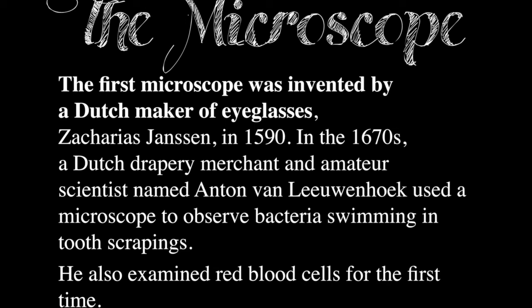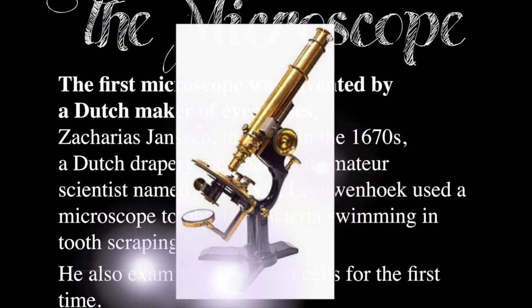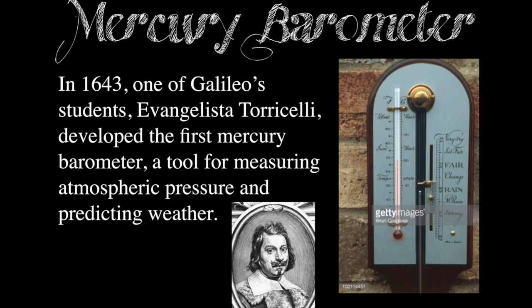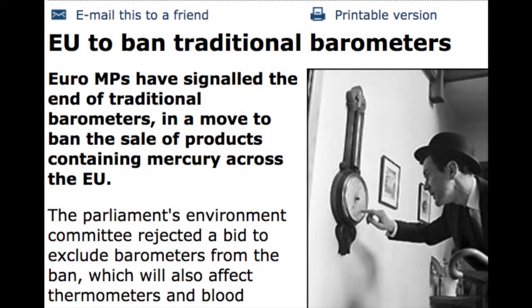A few examples of inventions from this time period: first, the microscope, developed by Janssen in 1590 — an important invention still used in science labs today. We also have the barometer, which measures atmospheric pressure and weather. An interesting fact: starting around 2007 in Europe and the late 1990s to early 2000s in the U.S., mercury barometers began to be banned because mercury can be harmful to humans. So today, most temperature-measuring devices no longer use mercury.